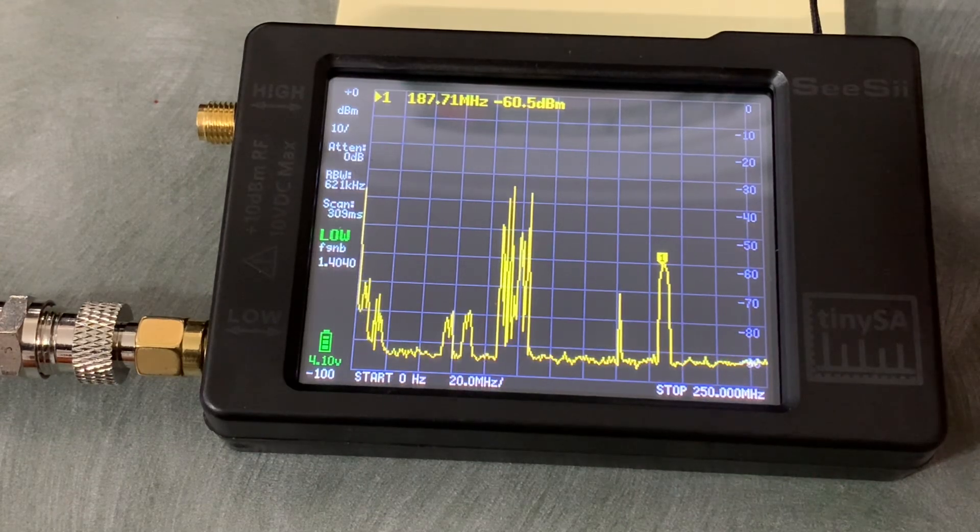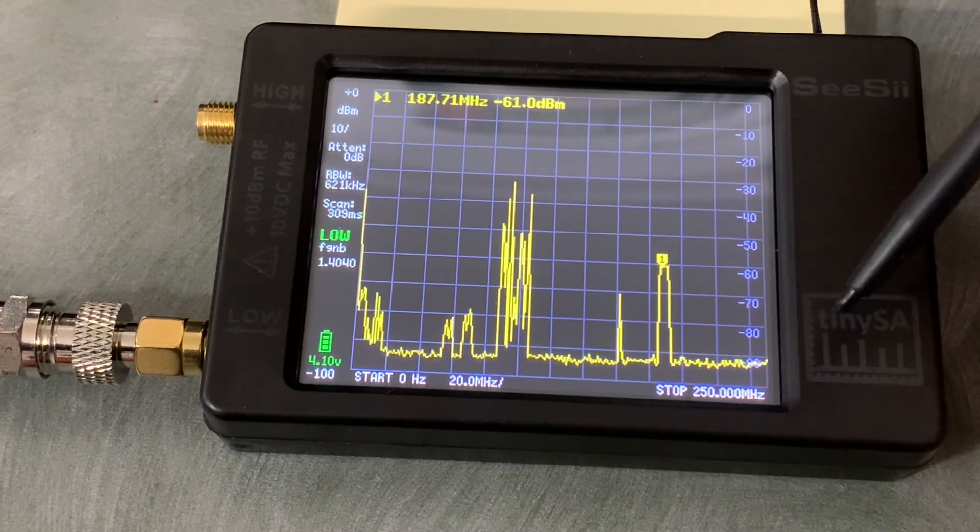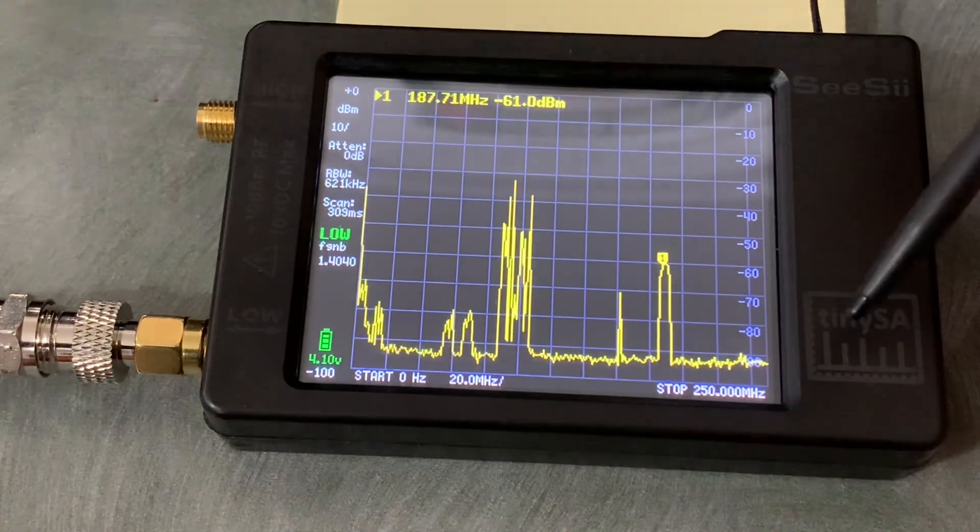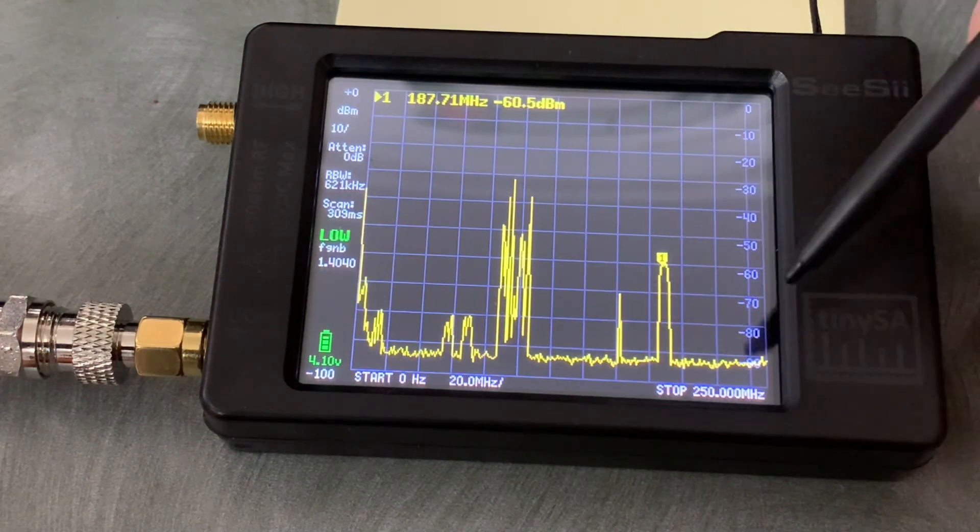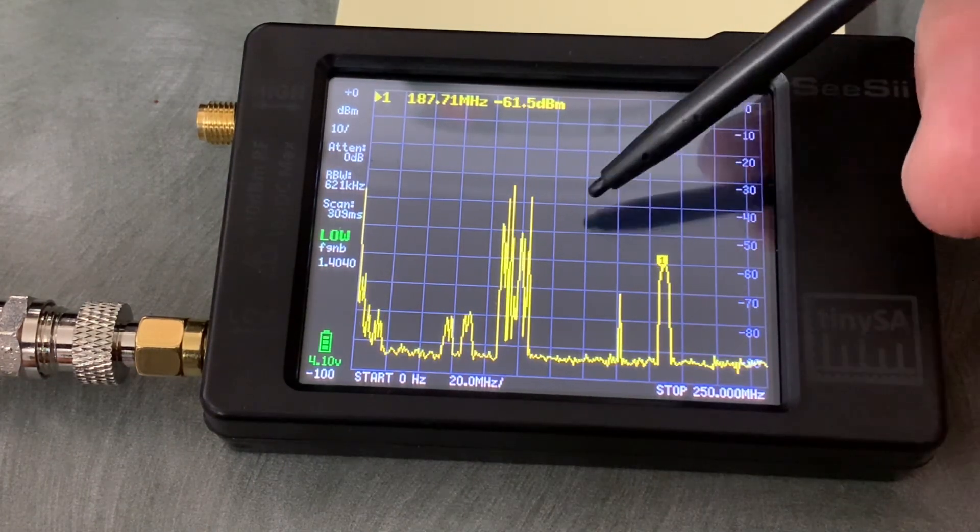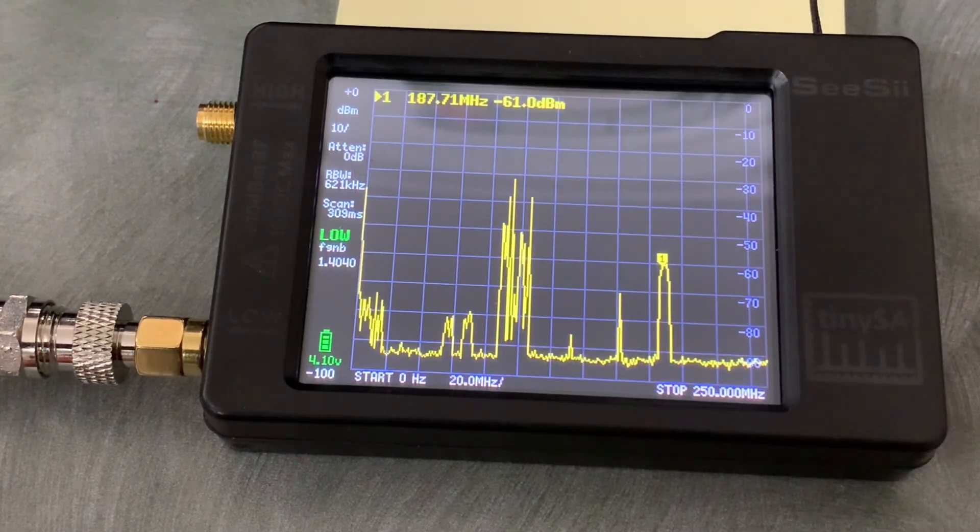And then over here is VHF TV channel 9, TVO. So you can kind of get a look at how the RF signals in this area stack up in terms of their levels or amplitude.